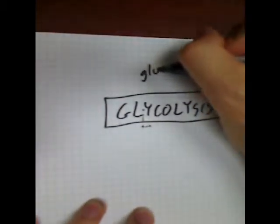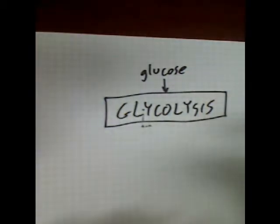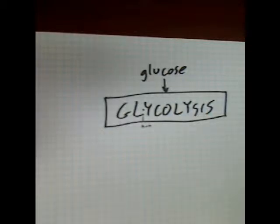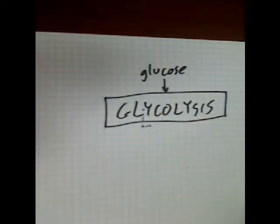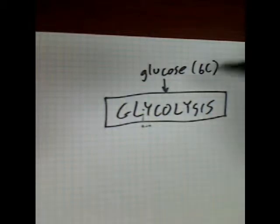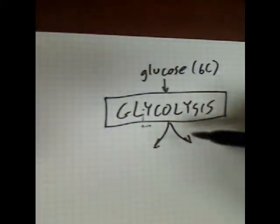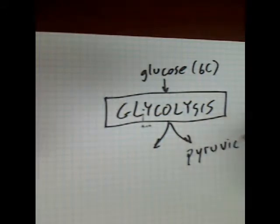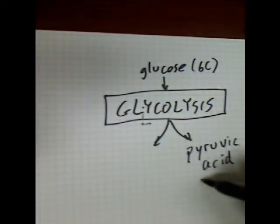We're going to start by taking a glucose molecule. Glucose enters the cell — glucose transporters bring glucose into the cell where it's met by a whole bunch of enzymes. Some of those enzymes grab onto a glucose and change it by adding a phosphate to it, making it into glucose-6-phosphate. Then another enzyme changes it into something else. This goes through 10 or 11 steps, and when it comes out, glucose — which has six carbons — is broken into two molecules of pyruvic acid, which has three carbons.